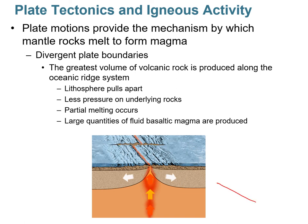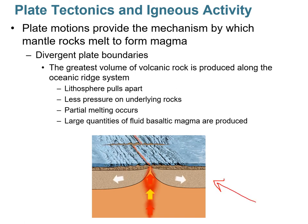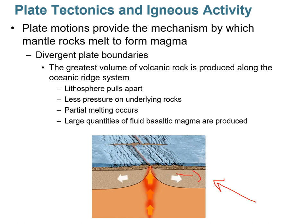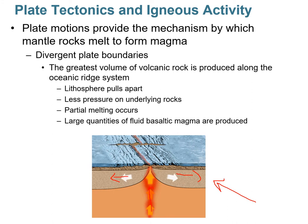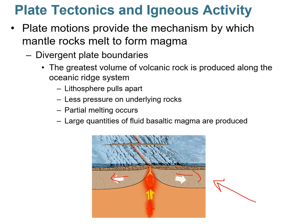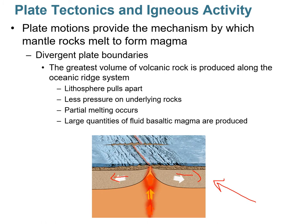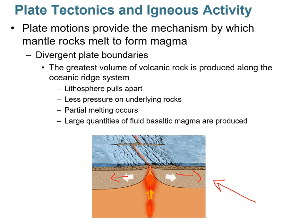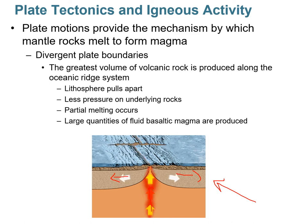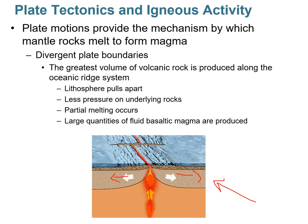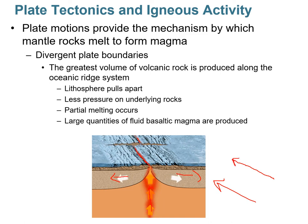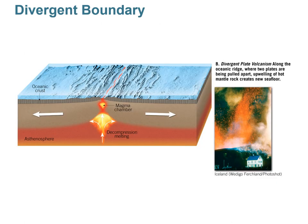The majority of magma is generated at divergent plate boundaries. Two ocean plates move away from each other, asthenospheric mantle rises to fill the gap, decompresses, and partial melting occurs. Large quantities of fluid basalts are generated — most crystallize within the ocean lithosphere as gabbro or basalt, but some erupt in the rift valley at the bottom of the seafloor forming pillow lavas. Iceland is an example of a divergent boundary where this activity has built up an entire island.